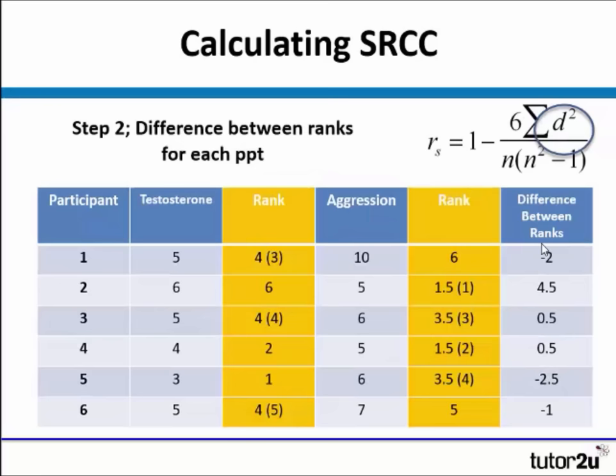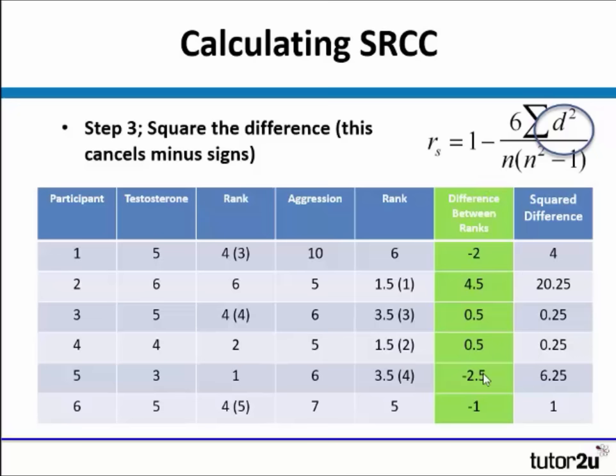The next thing we need to do is figure out the difference between the ranks for each participant. So 4 take away 6 is minus 2. 6 minus 1.5 is 4.5. 4 minus 3.5 is 0.5, and so on and so forth. Now we've found the difference between the ranks, we need to square it — step 3 is we square the difference, as this cancels out the minus signs. So 2 times 2 is 4, and so on and so forth.